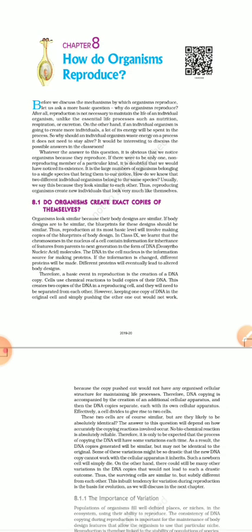Like nowadays, bottle gourd seeds will produce bottle gourd, and wheat seeds will produce wheat plants. This proves that reproduction means the production of the same kind of organism. We can see the reproduction process in plants as well as in animals — production of the same kind of organism is what is known as reproduction.